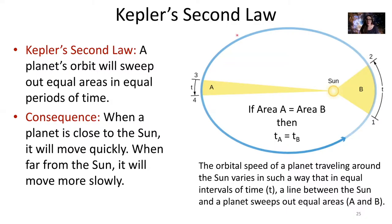Now going around our orbit, we come over here. In the same period of time T that I moved between points one and two, I am also moving between position three and four. The line connecting my planet and the sun sweeps out an area shaded in yellow, represented by area A. Same amount of time to move from three to four as from one to two, so those areas must also be the same size — sweeping out equal areas in equal amounts of time.